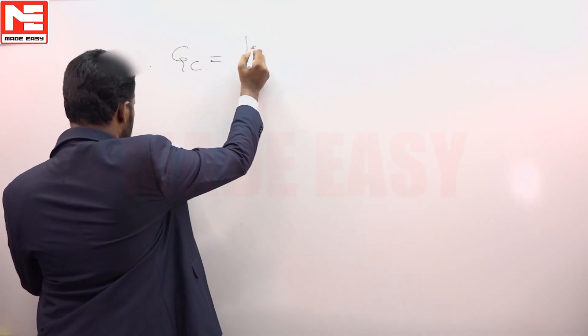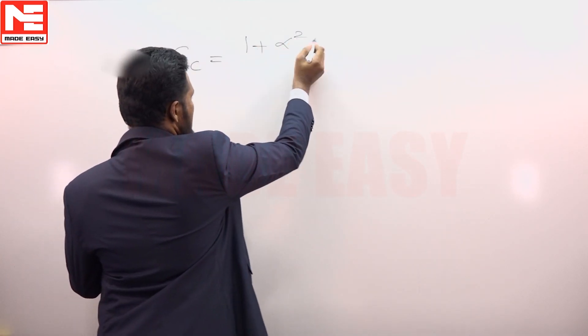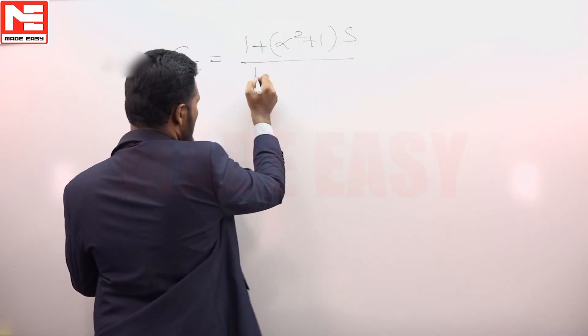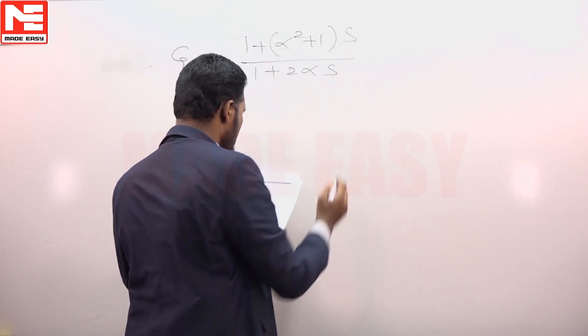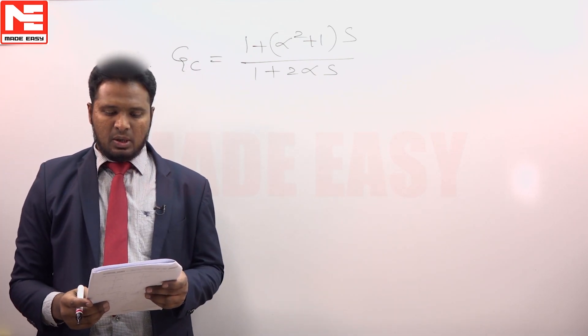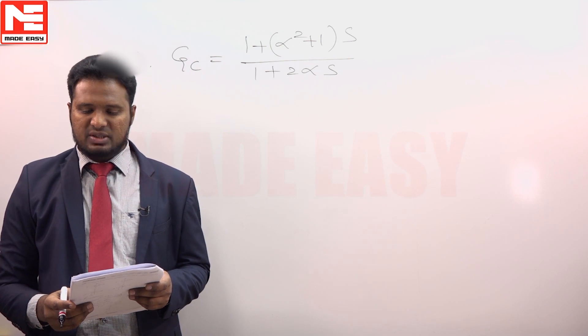Transfer function of a compensator is 1 plus alpha squared plus 1, s upon 1 plus 2 alpha s. The minimum value of alpha which makes it a lead compensator, where alpha belongs to the set of natural numbers.